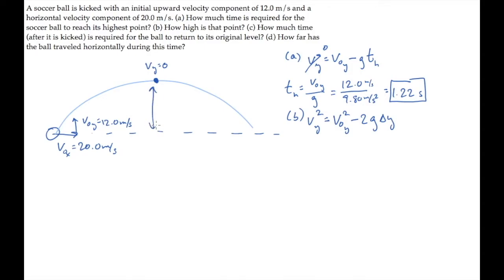is the change in height from the ground level where the ball started to the highest point. The final y component of velocity is zero at the highest point, so we can solve for delta y. It equals v_0y squared divided by 2g. Substitute the numbers to find that the ball's maximum height is 7.35 meters.